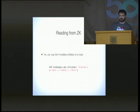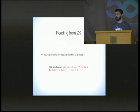You can also list the immediate children of a node. For example, zookeeper.get_children('/friends') will give you a list of your friends.